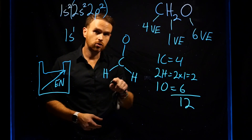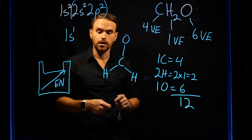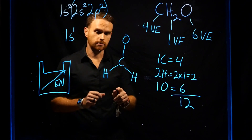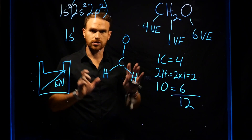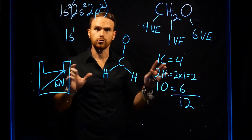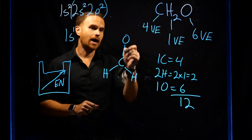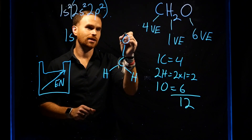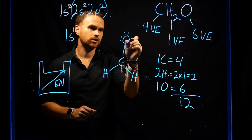Hydrogen only needs two electrons around it to have a full noble gas configuration. So each of these hydrogens are completely filled with their valence shell, which means we'll place the next six electrons around oxygen.